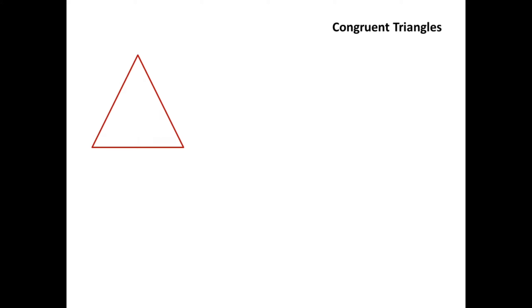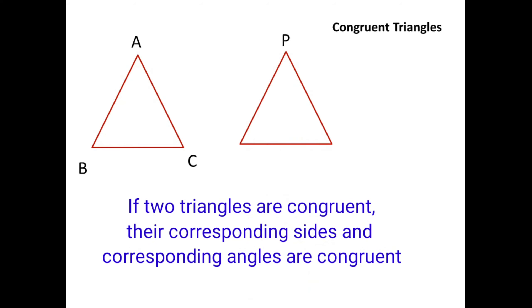In short, for triangles ABC and PQR, if they are identical to each other, it means the corresponding sides and corresponding angles are congruent to each other. That is why we say these two triangles are congruent triangles.